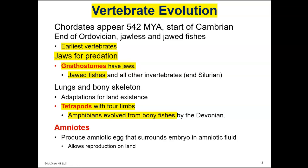The vertebrates that have jaws are called gnathostomes — that G is silent. Gnathostomes include the jawed fishes, both those with cartilage and those with bones. This does not include the agnathans, which are the jawless fishes. A lot of the vertebrates are tetrapods, meaning they have four limbs. The amphibians are the first tetrapods — they evolved from bony fishes.